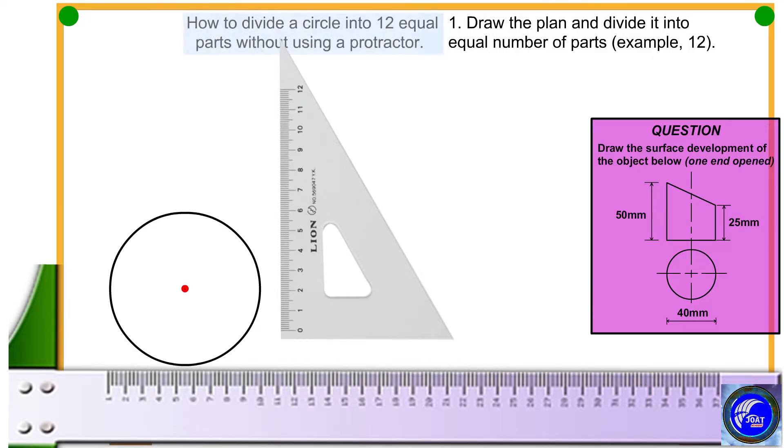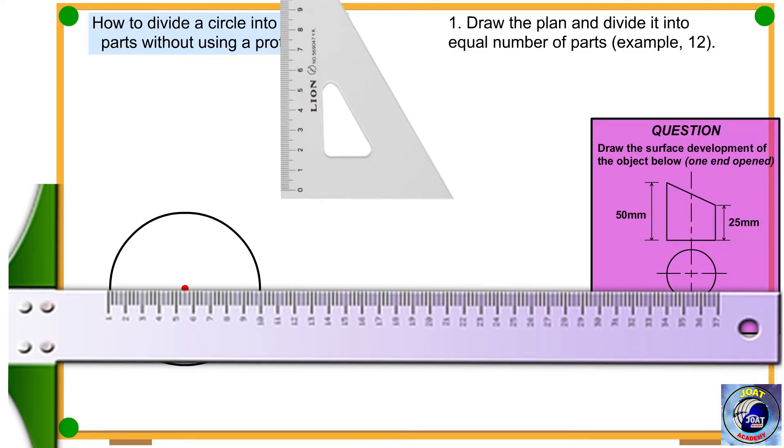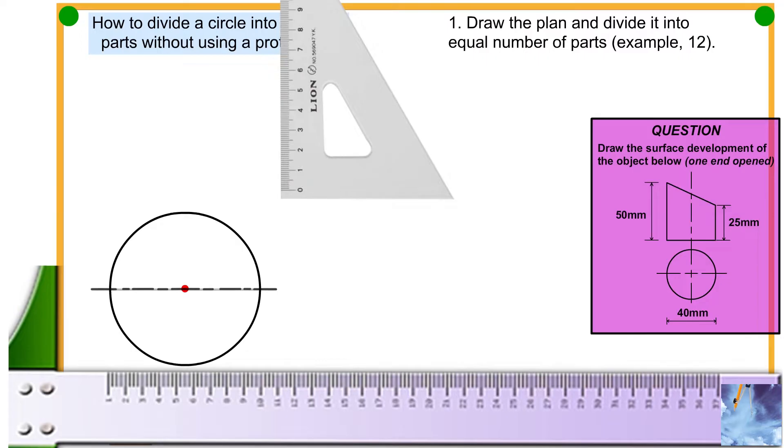You can do this with a protractor. The key thing here is the dragging and turning of the set square. Enjoy the demonstration.